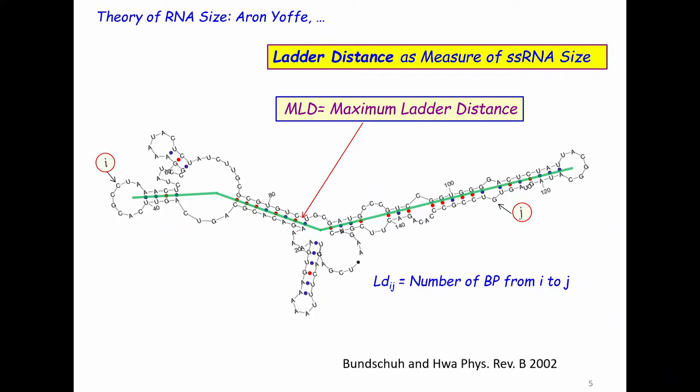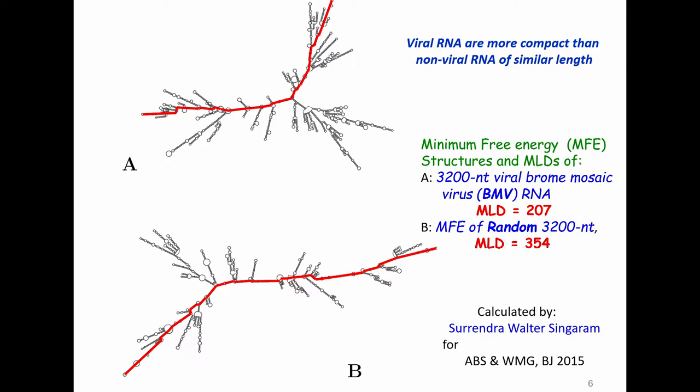To characterize the size of RNA, first we start with a secondary structure. Here is a simple example that you see. We adopted from Bundschuh and Hwa's paper, 2002, what they call the ladder distance. The ladder distance is you take two base pairs and you count how many ranks, how many base pairs you have between them. In particular, we looked at the maximum ladder distance, at the largest hairpin to hairpin distance. That's a measure of the size of the RNA. Here you have an example. This is a viral RNA and you see its MLD is about 200. That's how many base pairs you have from this point to this point, the longest. It's comparable to what you have between here and here.